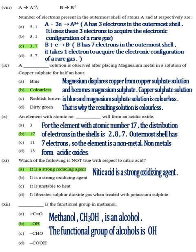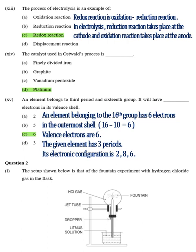Part 12, Answer B, OH. Methanol CH3OH is an alcohol. The functional group of alcohols is OH.